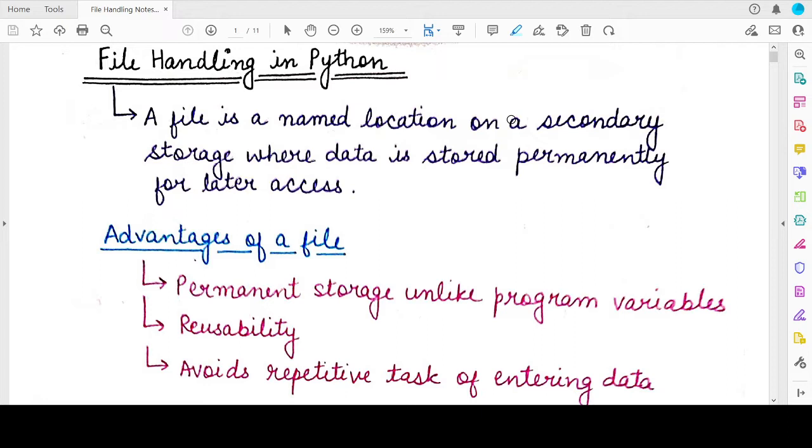But a file is a way of storing the values, storing some data and variables permanently on a secondary storage device, like a disk.